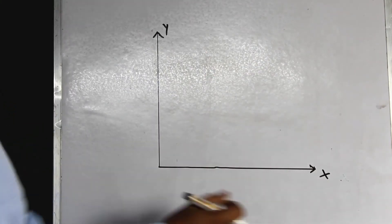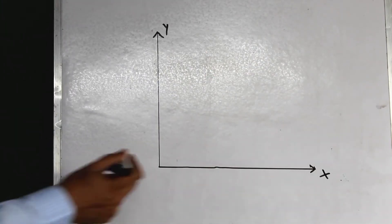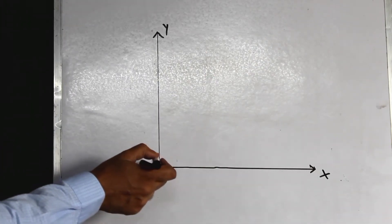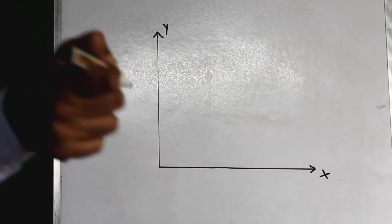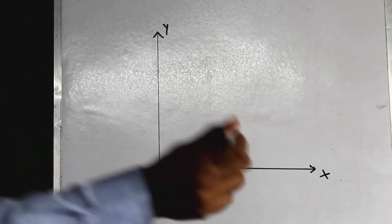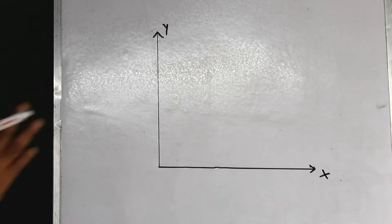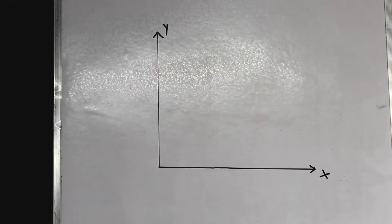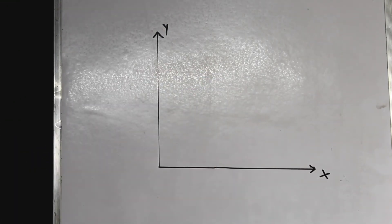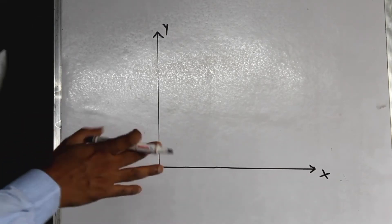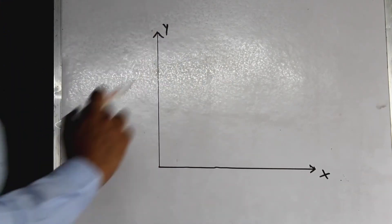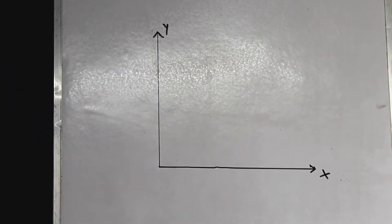Let us consider this board to be the xy-plane — that is, the z-axis would be pointing out of the screen, out of the board towards you. Now, all the degrees of freedom that I can conveniently draw on this board would be the in-plane degrees of freedom, and the degrees of freedom that I cannot draw on this board would be the out-of-plane degrees of freedom.